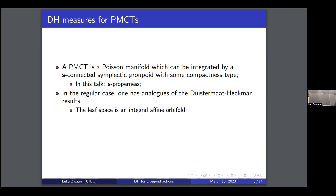Before you can state that, what allows you to talk about linear variation is that your base is not a linear space anymore, so it's not straightforward. One of the key features of PMCTs is that the leaf space has nice structure — it has the structure of an integral affine orbifold — and this is what allows you to formulate what it means to have linear variation or be polynomial. Linear variation here means you're looking at the symplectic forms on the leaves, and as you vary from leaf to leaf, you have a linear variation in cohomology.